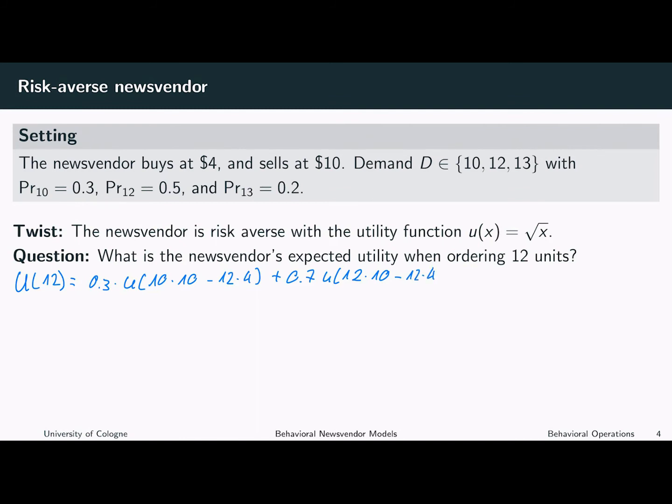Let's do the calculation. In the first case, we have a profit of 100 minus 48, which is 52. In the other case, our profit is given by 120 minus 48, which is 72.